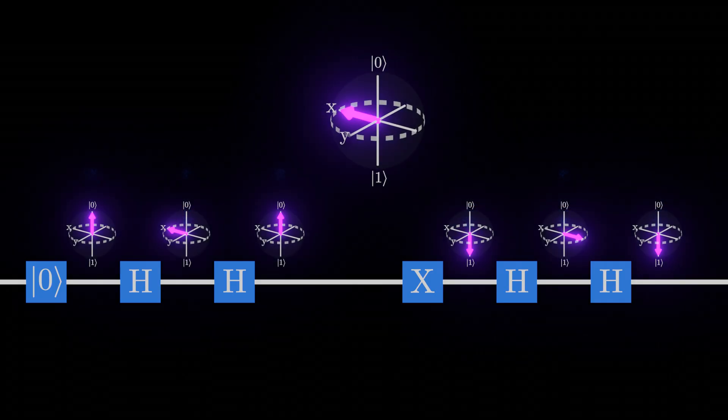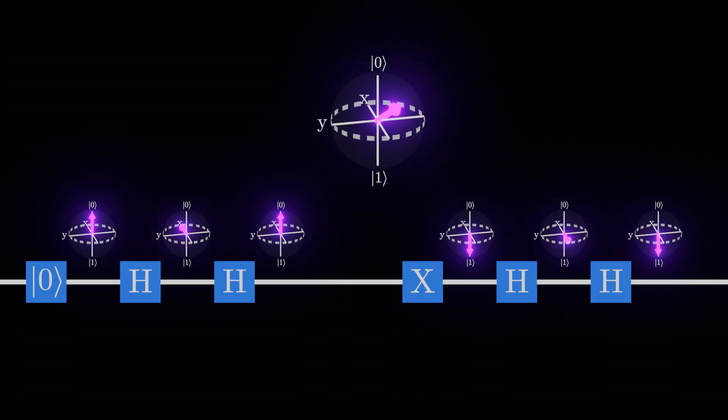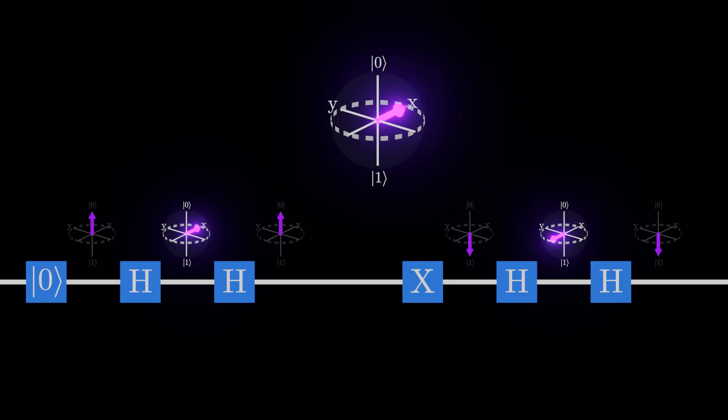Last time, we used the Bloch sphere to represent singular qubits. This allows for many different states halfway between 0 and 1, the fact that the Hadamard gate relies on to work properly.